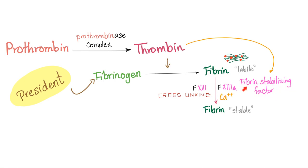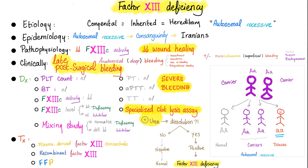The function of the fibrin stabilizing factor, or Factor 13, is cross-linking of labile fibrin fibers into stable, strong fibrin fibers — and we need calcium for that. The etiology is congenital, inherited, autosomal recessive. Pathophysiology: there is decreased Factor 13 activity. Clinically, Factor 13 is critical for stabilizing fibrin fibers; otherwise all previous coagulation steps are worthless. This results in severe late post-surgical bleeding, decreased wound healing — because wound healing requires primary hemostasis, secondary hemostasis, fibrinolysis, and then regeneration — and deep anatomical bleeding.